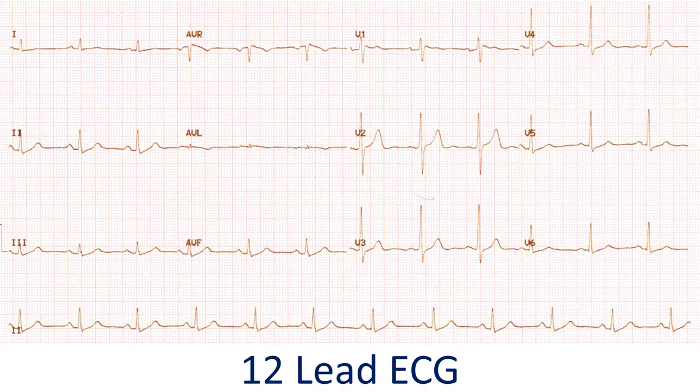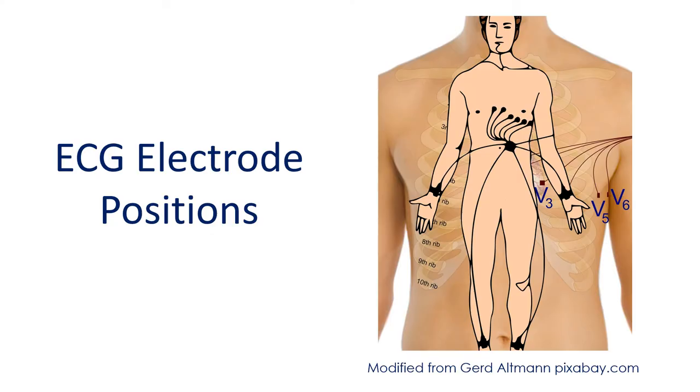First the upper chambers contract and after a delay the lower chambers contract. This delay is needed for the proper filling of the lower chambers when the upper chambers contract. Contraction of the lower chambers pumps blood to various parts of the body.